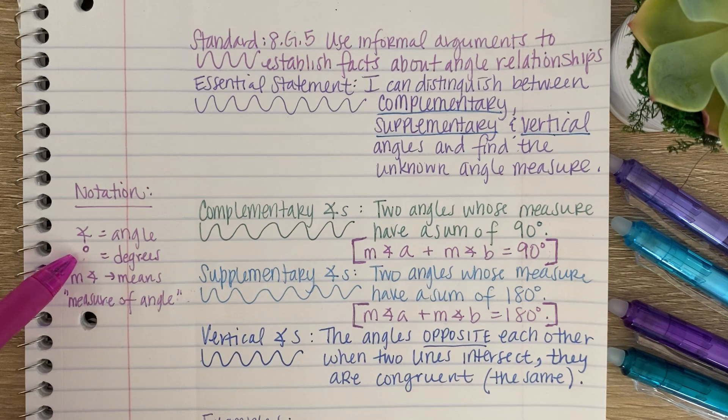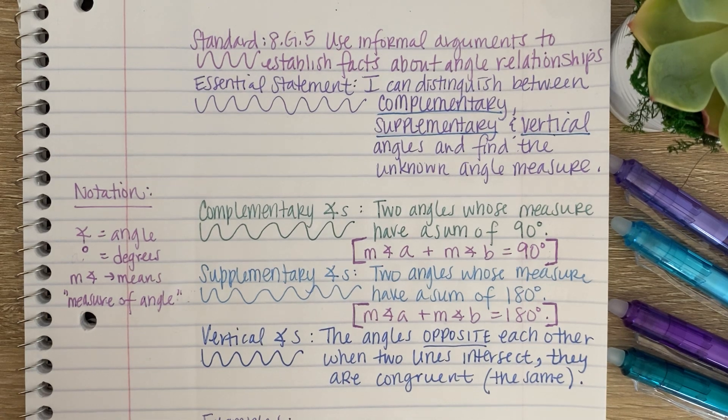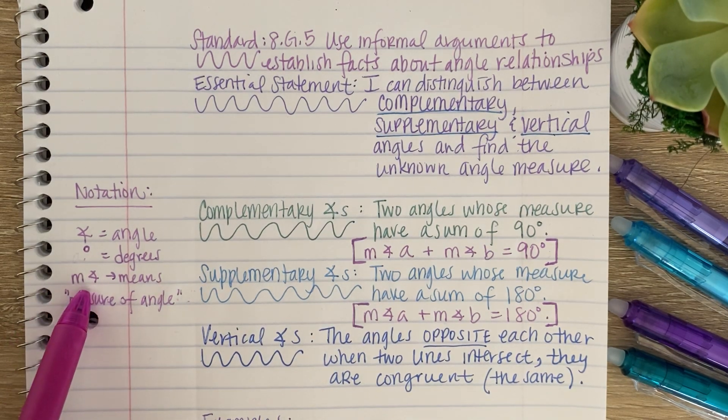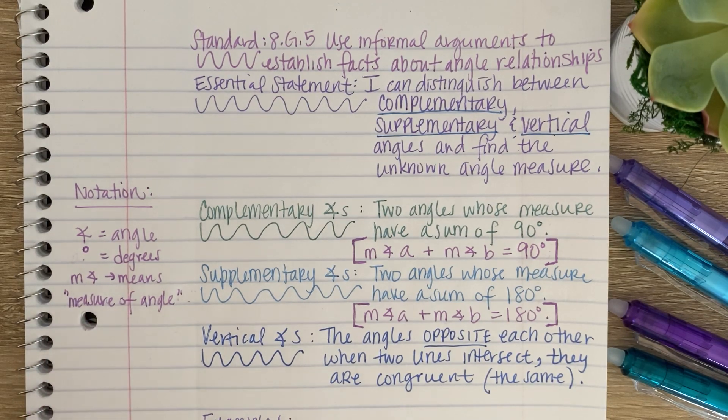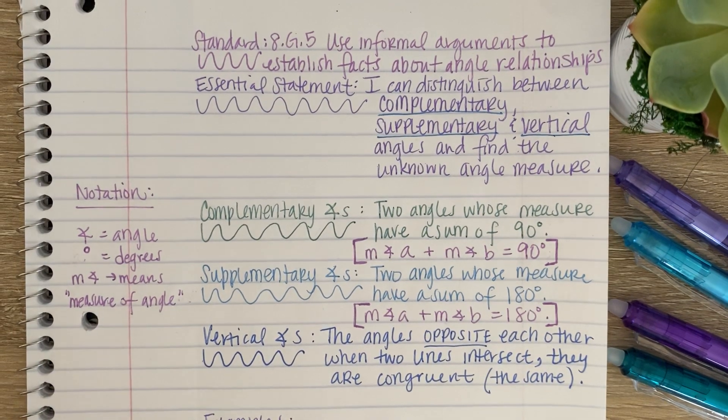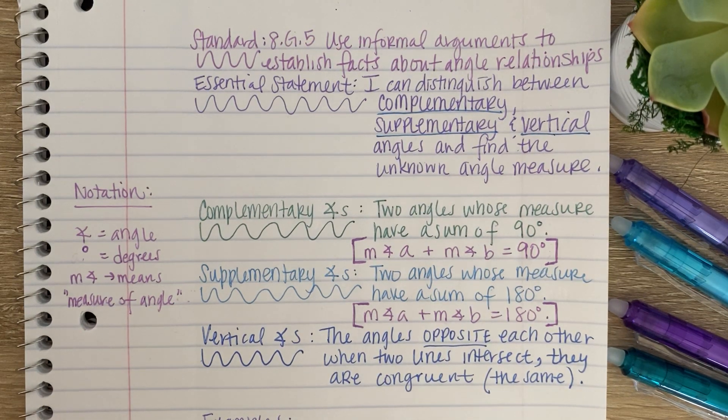This symbol right here means angle. The little circle above 90 means degrees. Angles are measured in degrees, so we will label our angles with that symbol. And then M and then an angle means the measure of an angle. So again, complementary angles, two angles that add up to 90 degrees.